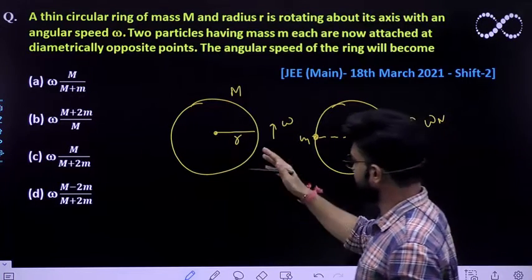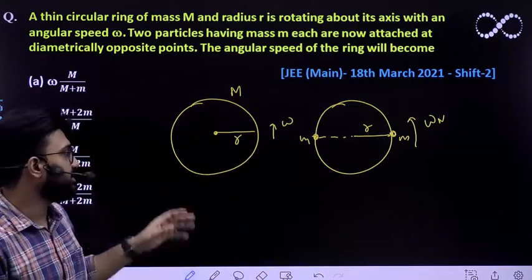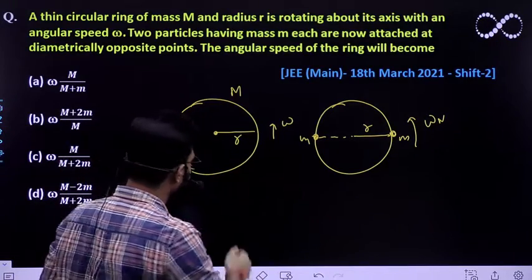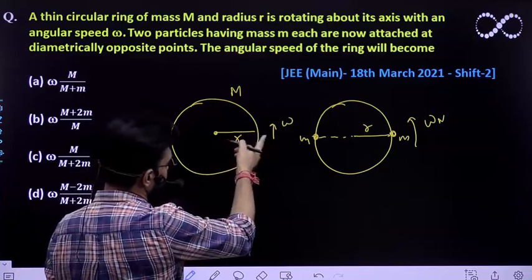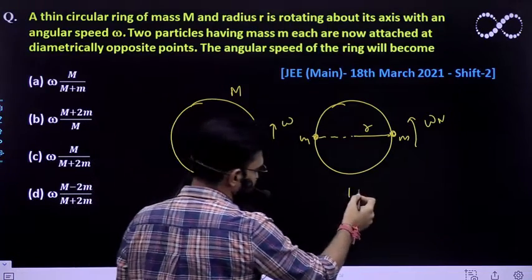We already know that in such type of questions, angular momentum remains conserved. What would be the angular momentum for the first setup and this is for the second setup.